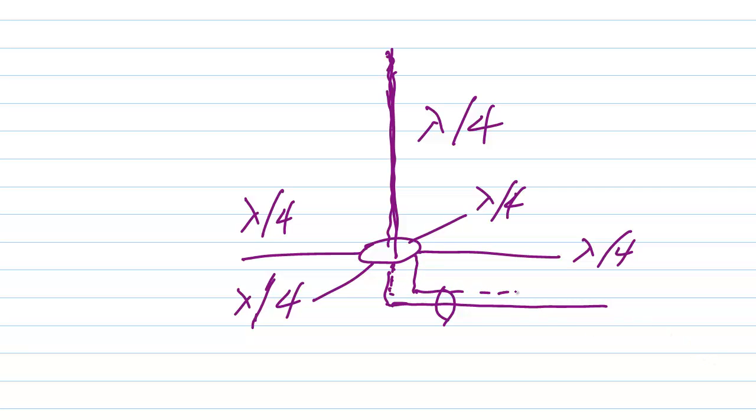So this is your coaxial cable, which then goes to your transmitter or receiver, or both transceiver. Generally a 50 ohm coaxial cable feed line.